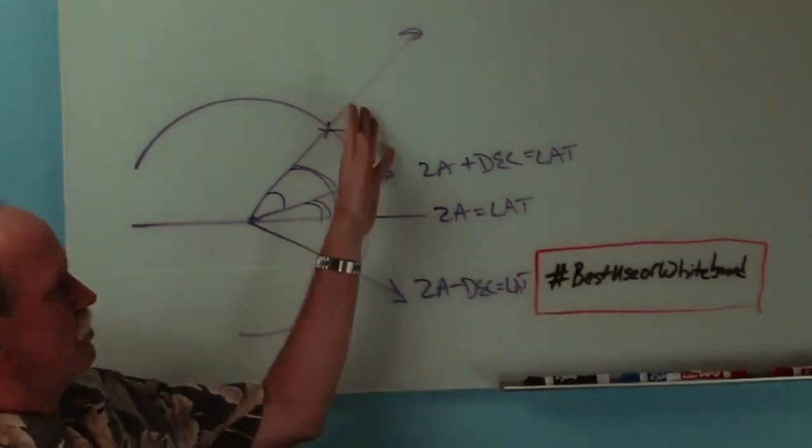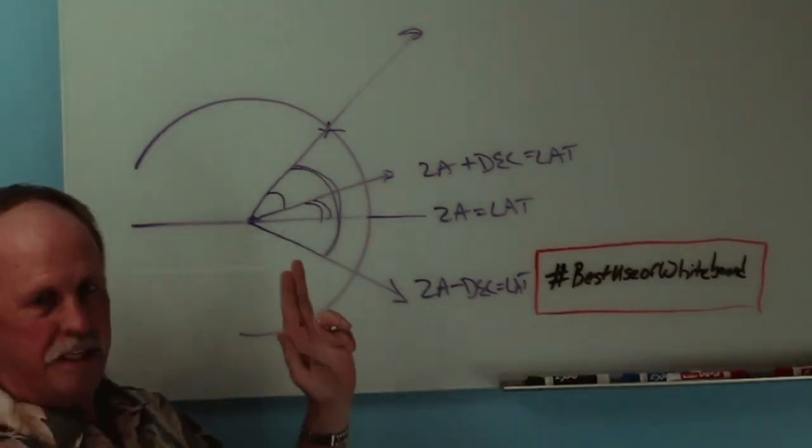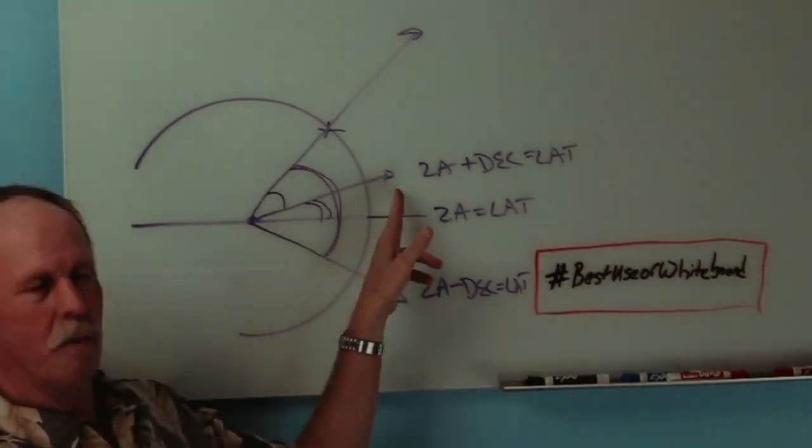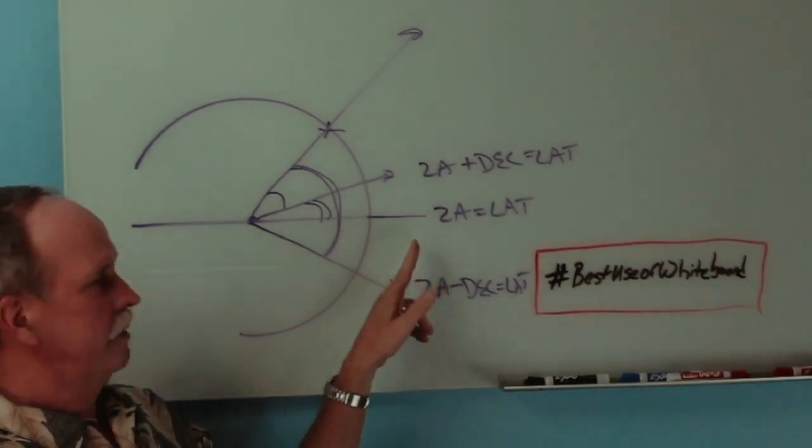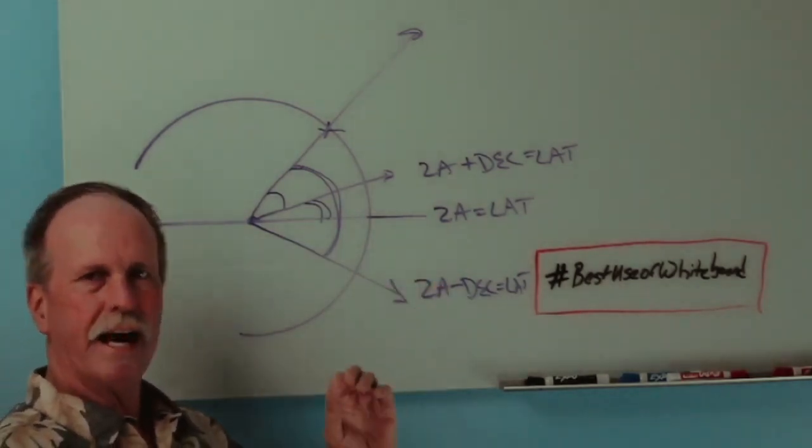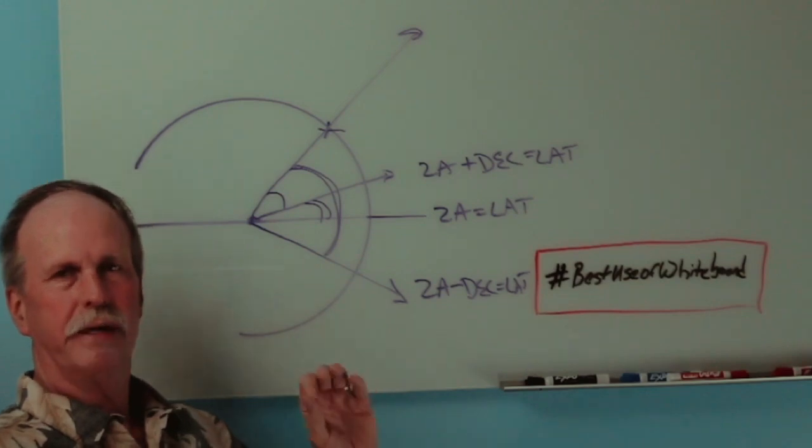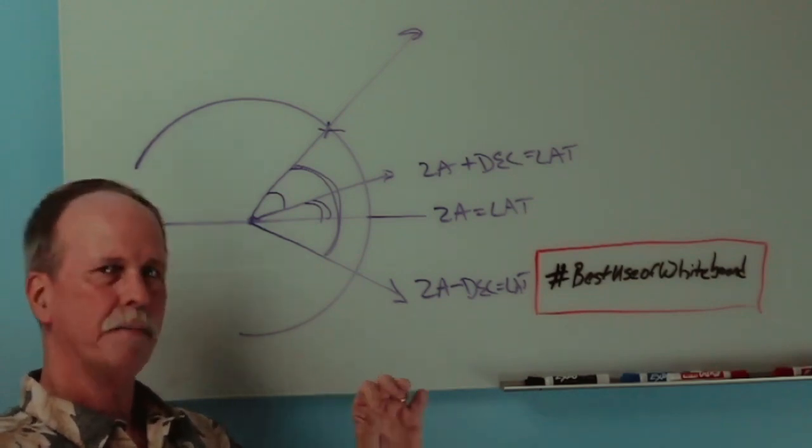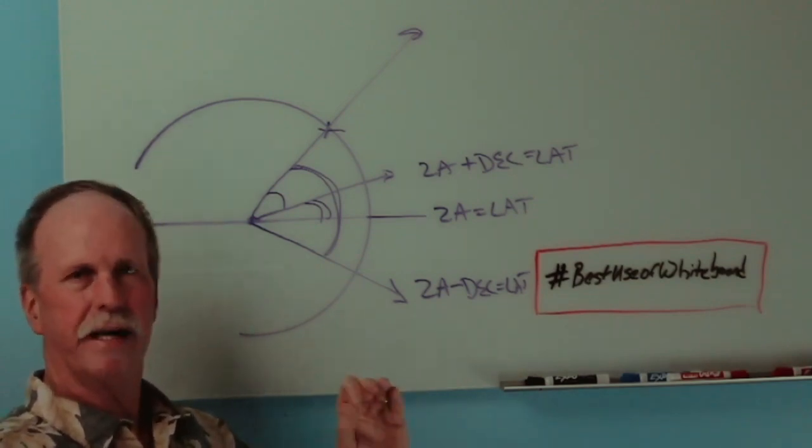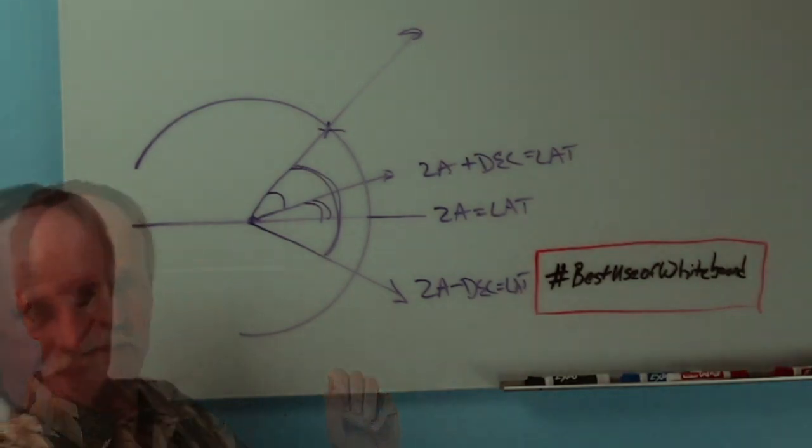So the first thing that you have to say is, well, what hemisphere am I in? Second, is the Sun between me and the equator? Is it on the equator or is it on the other side of the equator? And for that, you look up the declination of the Sun in the Naval Almanac and it'll tell you what it is every hour of every day of the year. So for example, when I was in Florida, the Sun was north of the equator.